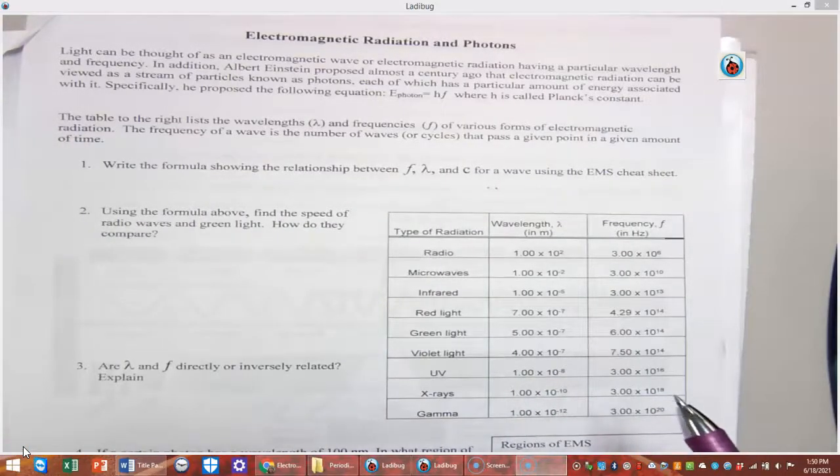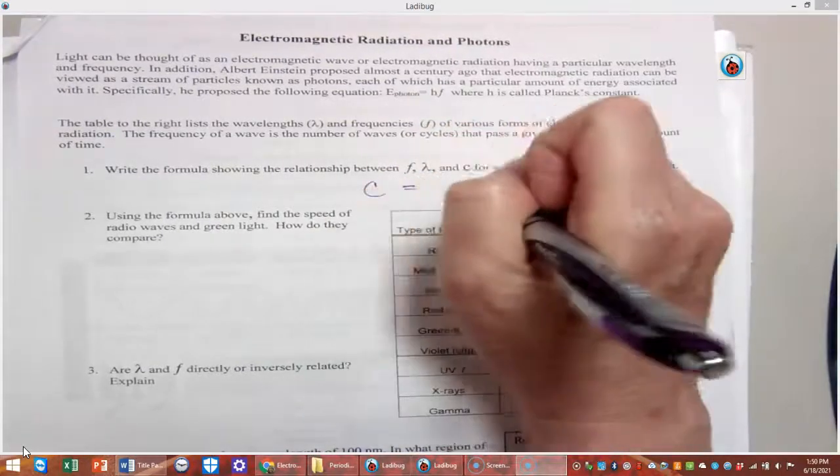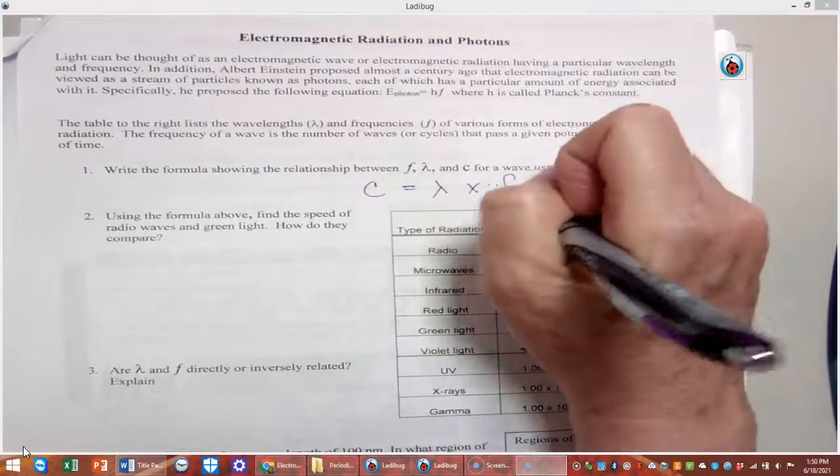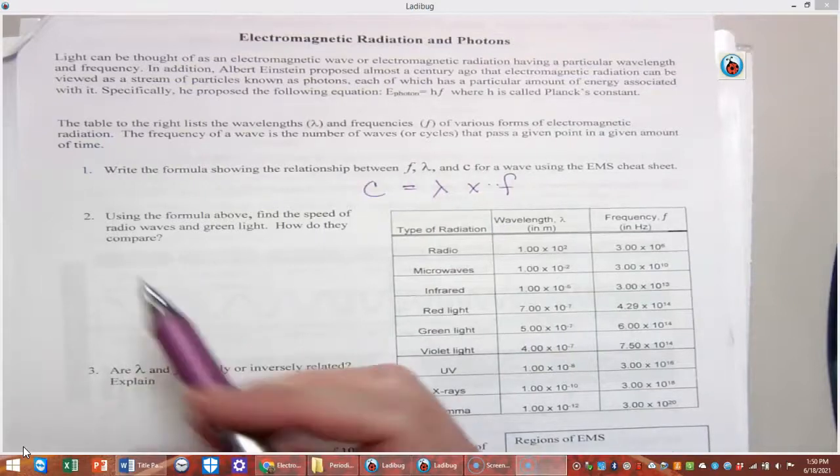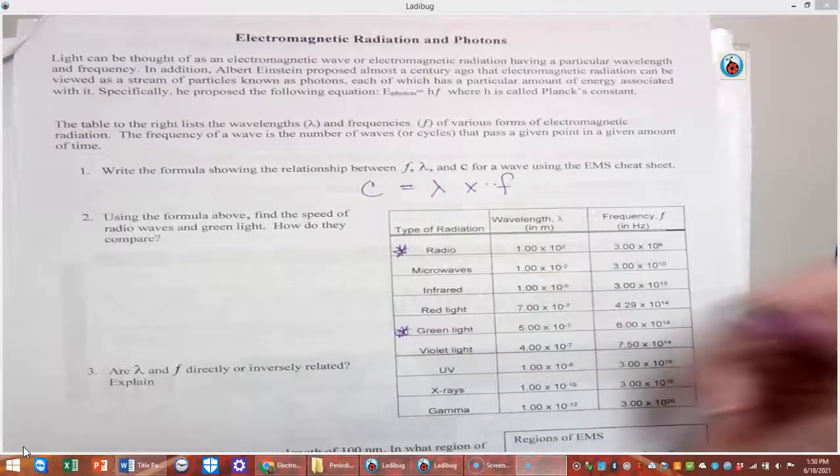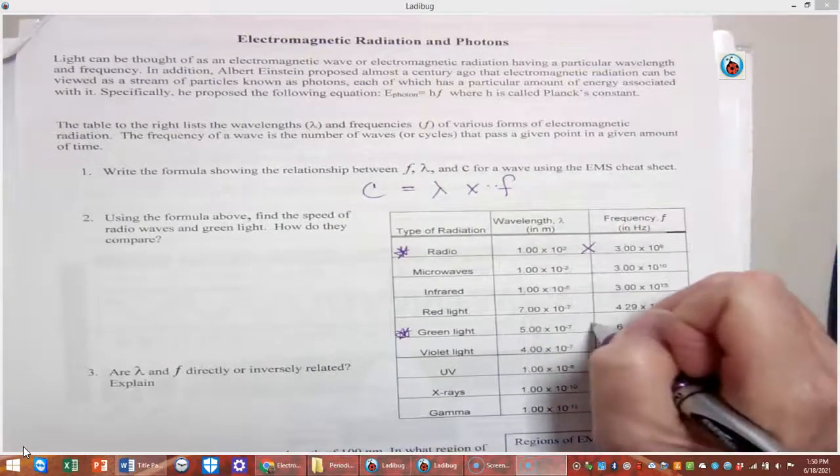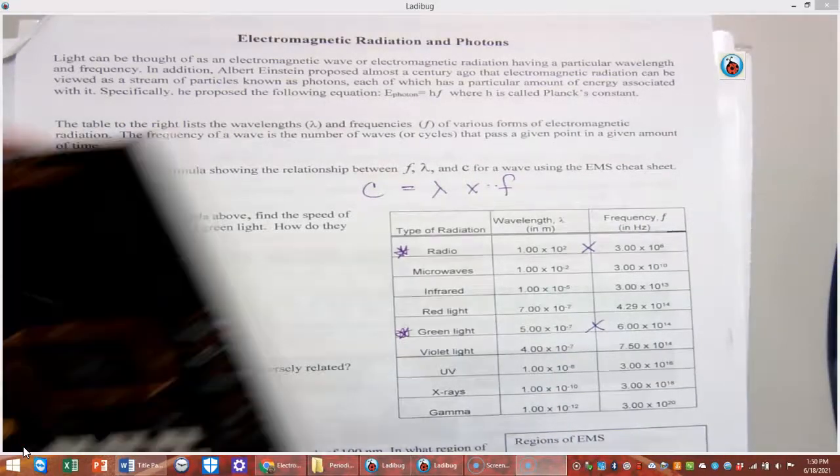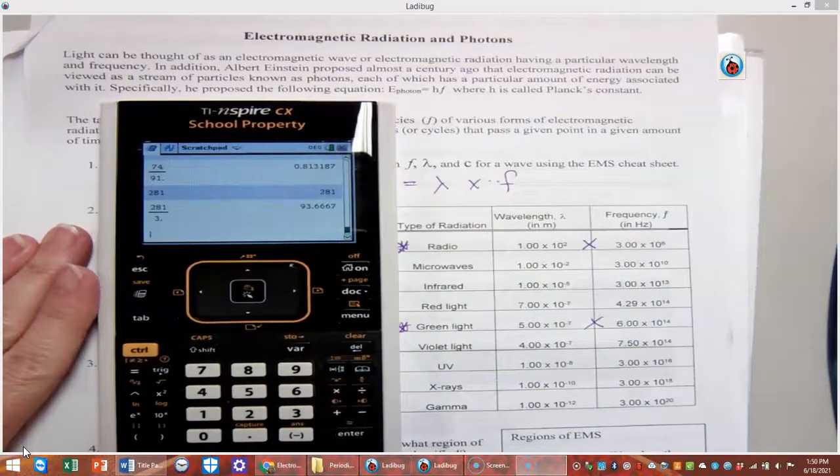So if the formula is speed of light equals wavelength times frequency, and we're going to find the speed of light for radio waves and green light, what are we going to do? We're just going to multiply wavelength times frequency, and when you do that, let's recall how we put these into the calculator.